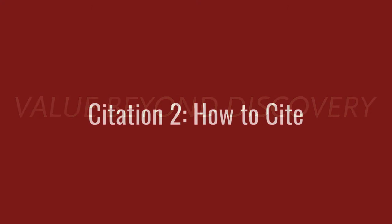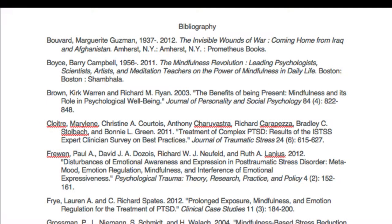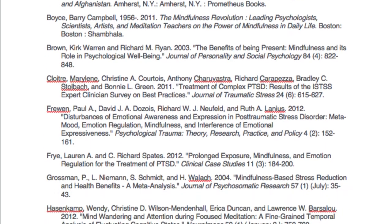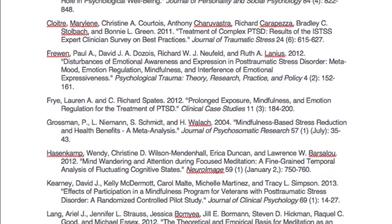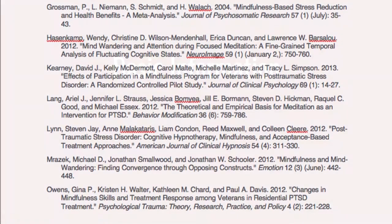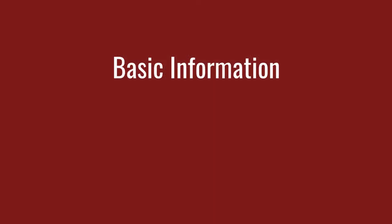Welcome to the BC Library's Core Skills Tutorial, Citation 2: How to Cite, the second in a two-part series. Citation can look complicated and arbitrary, but in spite of formatting differences, citation styles all require the same basic types of information.